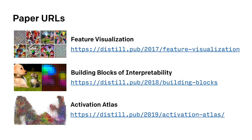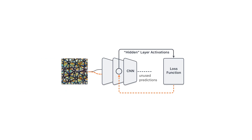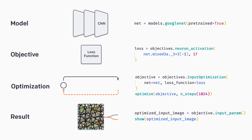That was an overview of applications we've used feature visualization for. If you're interested in reading more, we have papers on distill.pub, a journal that publishes interactive articles where you can play with the techniques yourself. Now let me focus on how we plan to implement feature visualization in PyTorch in a way that feels natural to PyTorch users. We're optimizing an image based on an objective that is a function of the activations of a neural network, which means we'll need to extract activations using hooks, and we'll need a parameterization that has parameters, outputs an image, and allows us to backprop into it.